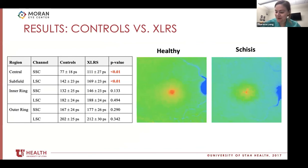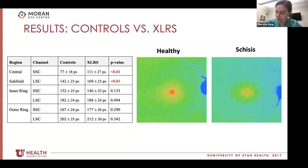Looking at the results — it was really exciting. The mean FLIO lifetimes were significantly different between the controls and the X-linked retinoschisis or other foveal schisis patients in the central subfield based on the standard ETDRS grid, but they weren't significantly different in the inner ring or the outer ring.